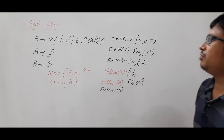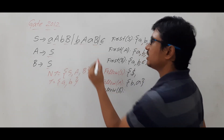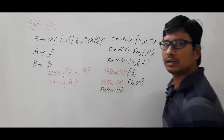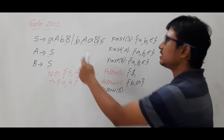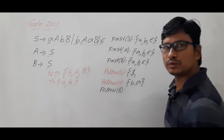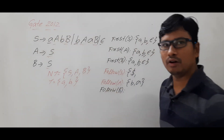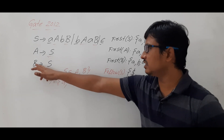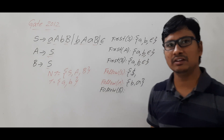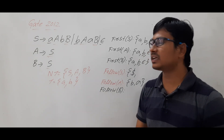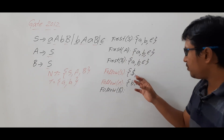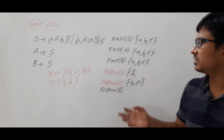For FOLLOW of B, I need to first identify where B appears in the right-hand side of the productions. After B, nothing is there in either production, so FOLLOW of B is equal to FOLLOW of S. Here it is saying FOLLOW of S, and here it is also saying FOLLOW of B is equal to FOLLOW of S.